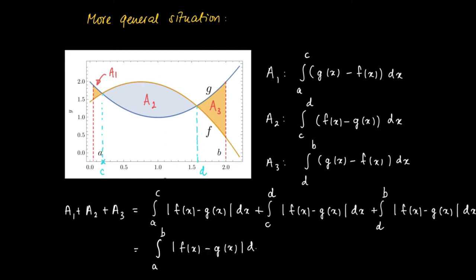Now we can glue these parts. The integral from a to c, from c to d, and d to b is the same thing as taking the integral from a to b of the absolute value of f(x) minus g(x).